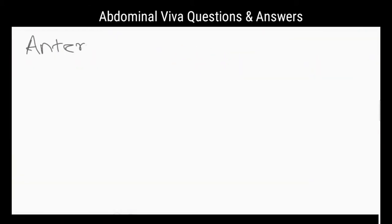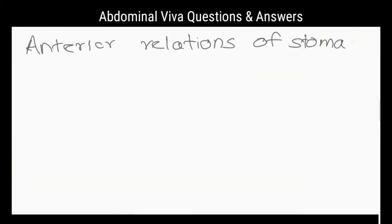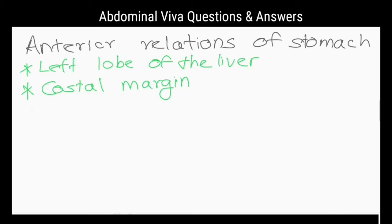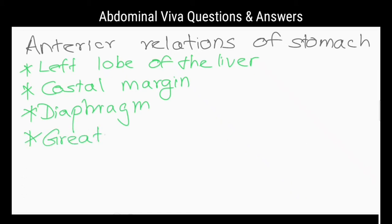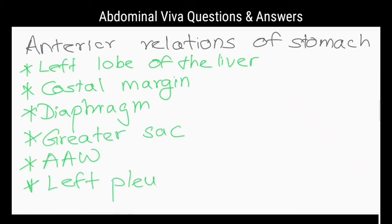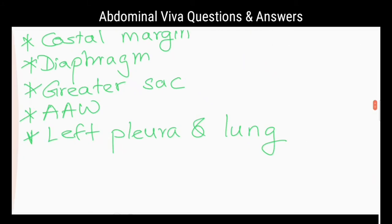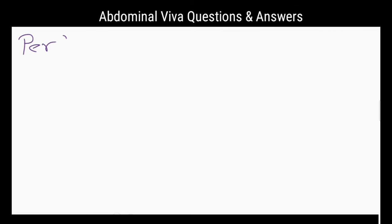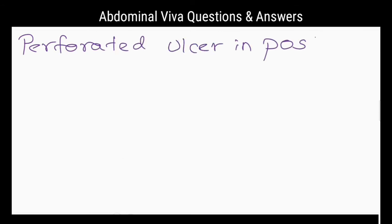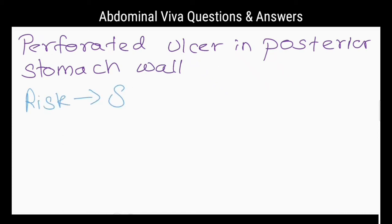What are the anterior relations of the stomach? The left lobe of the liver, costal margin, diaphragm, greater sac, anterior abdominal wall, left pleura, and left lung.